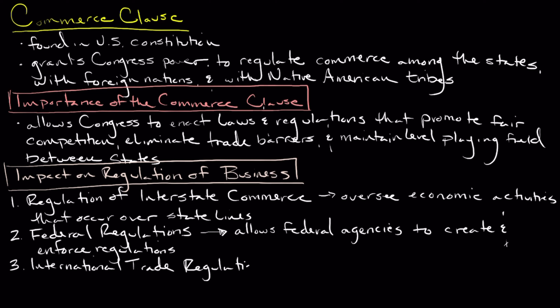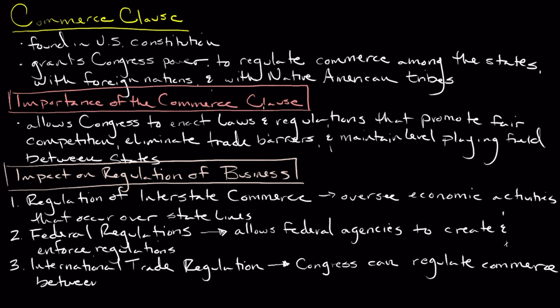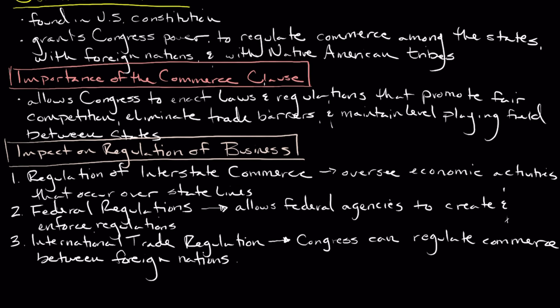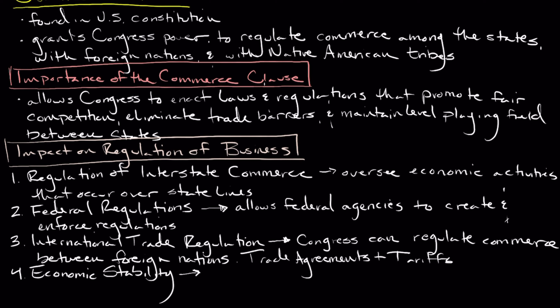In addition to interstate commerce, the Commerce Clause also grants Congress the authority to regulate commerce with foreign nations. This power enables the federal government to negotiate trade agreements, establish tariffs or other import and export restrictions, and set rules and standards for international trade. It allows for the protection of national economic interests and the promotion of fair trade practices.